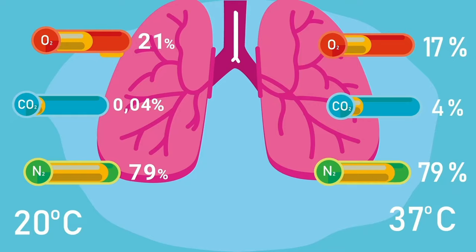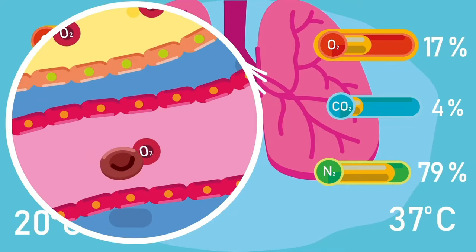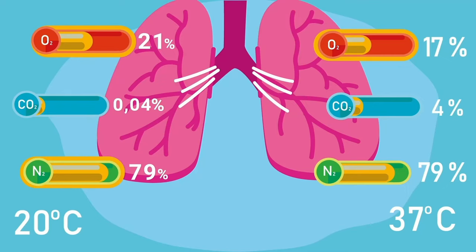It is interesting to note here that from the 21% entering the body, only 4% of the oxygen is diffused into the bloodstream. The rest is exhaled out. However, the amount of nitrogen remains the same during inhalation and exhalation, showing that nitrogen does not involve in the gaseous exchange process.